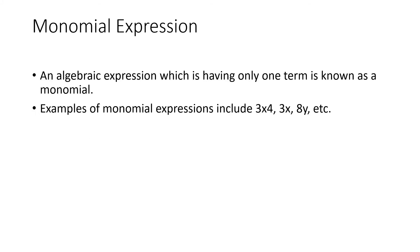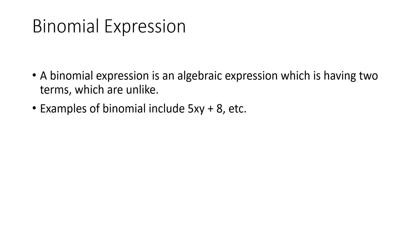What is a monomial expression? The word mono means one. So a monomial expression is an expression with a single term. For example: 3x⁴, 3x, or 8y — these are monomial expressions with only one single term. Next, binomial expression — bi means two, so here we have two terms. For example: 5xy + 8.